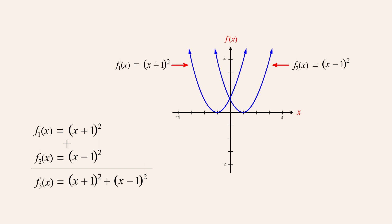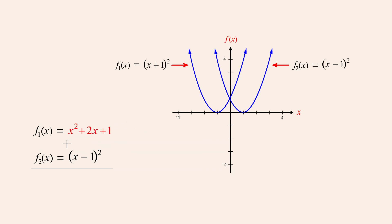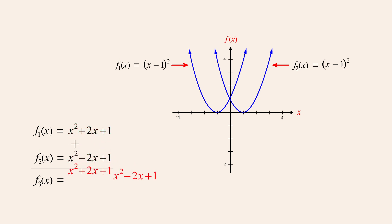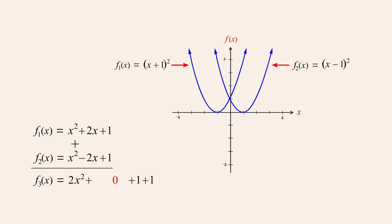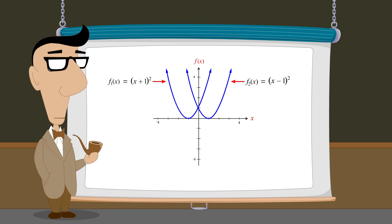These two functions may not look like polynomial functions but that's because they are not written in standard form. Squaring x plus one, we get the polynomial x squared plus 2x plus 1. And squaring x minus one, we get x squared minus 2x plus 1. Adding these polynomials, we get the polynomial function 2x squared plus 2, whose graph is also a parabola. So adding these two parabolic functions produces another parabolic function.